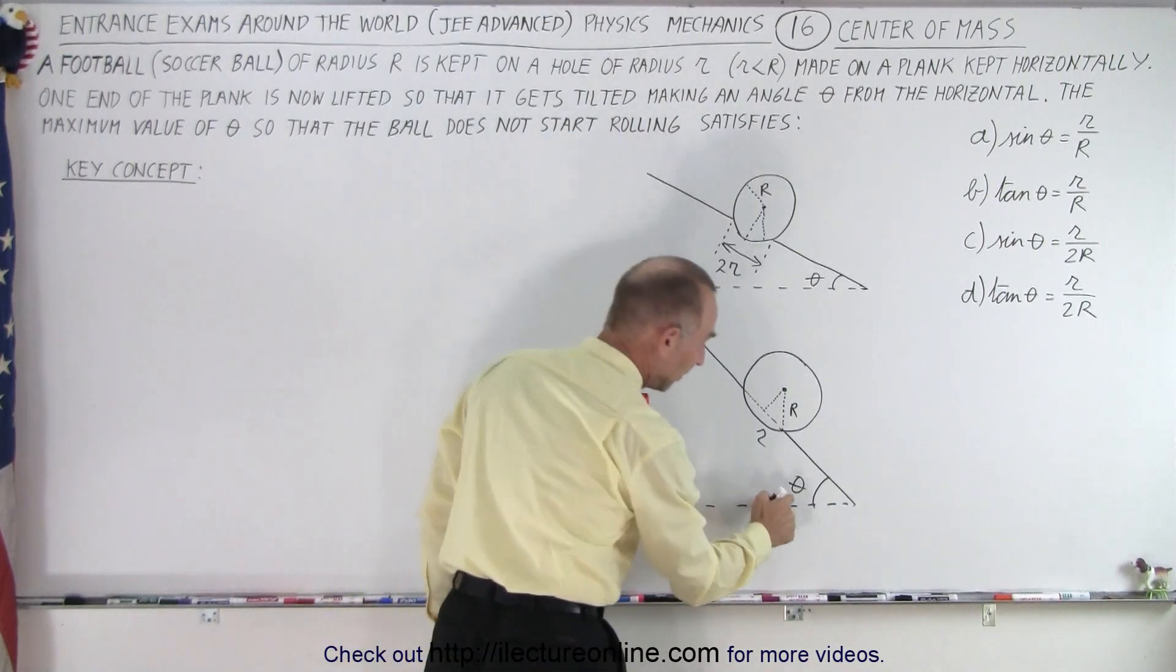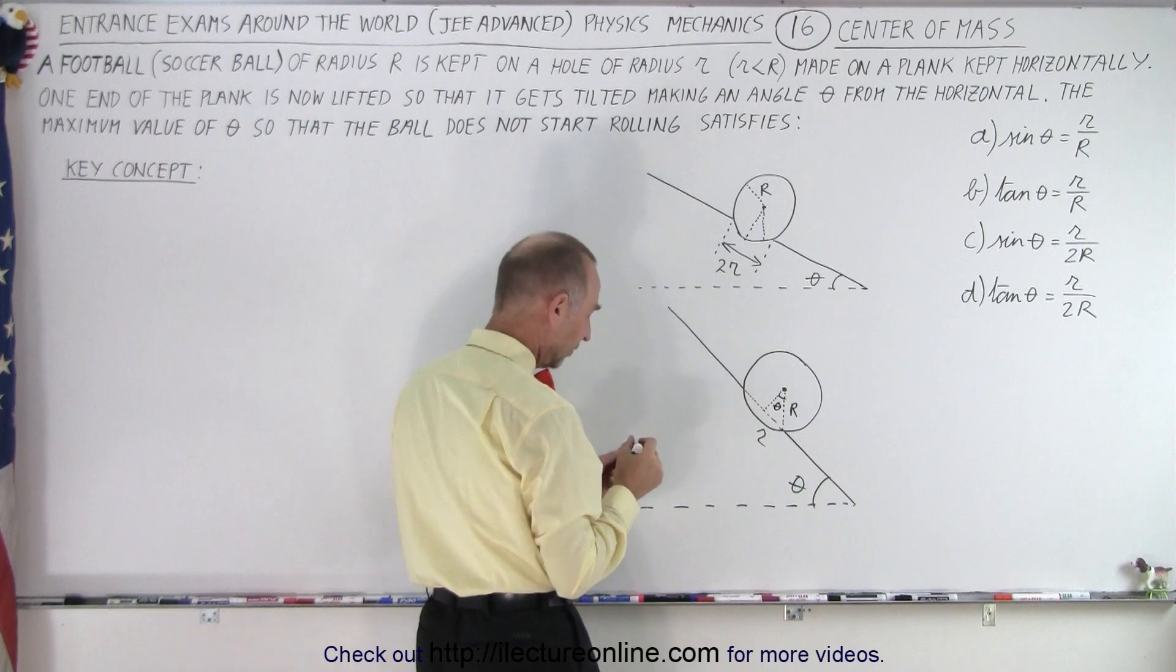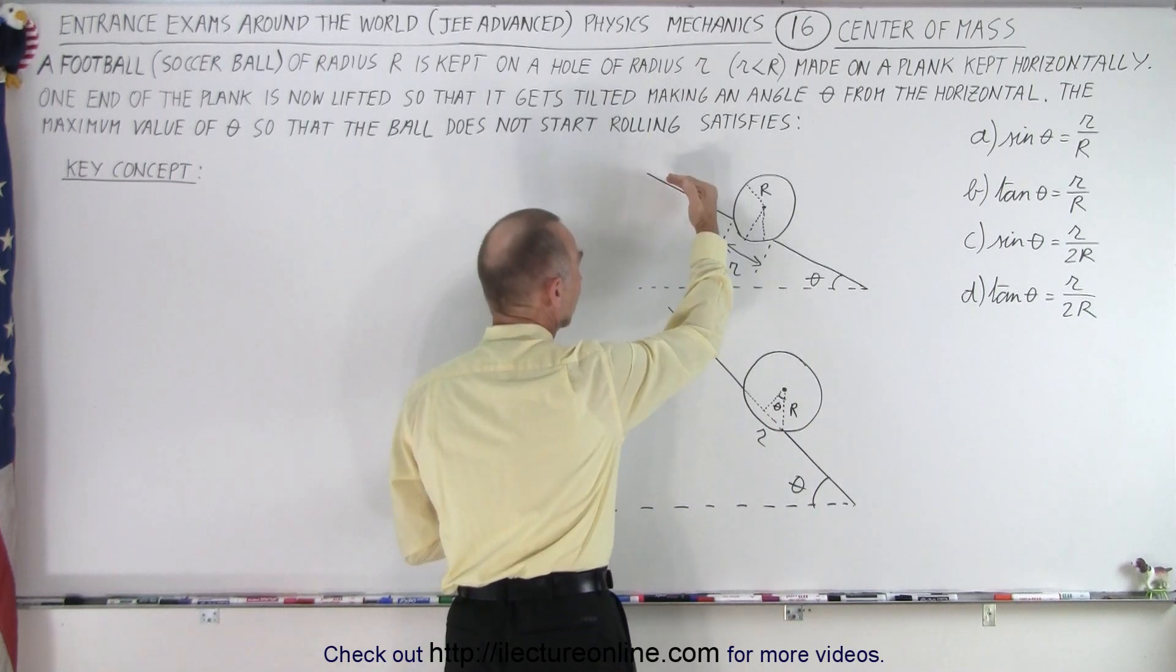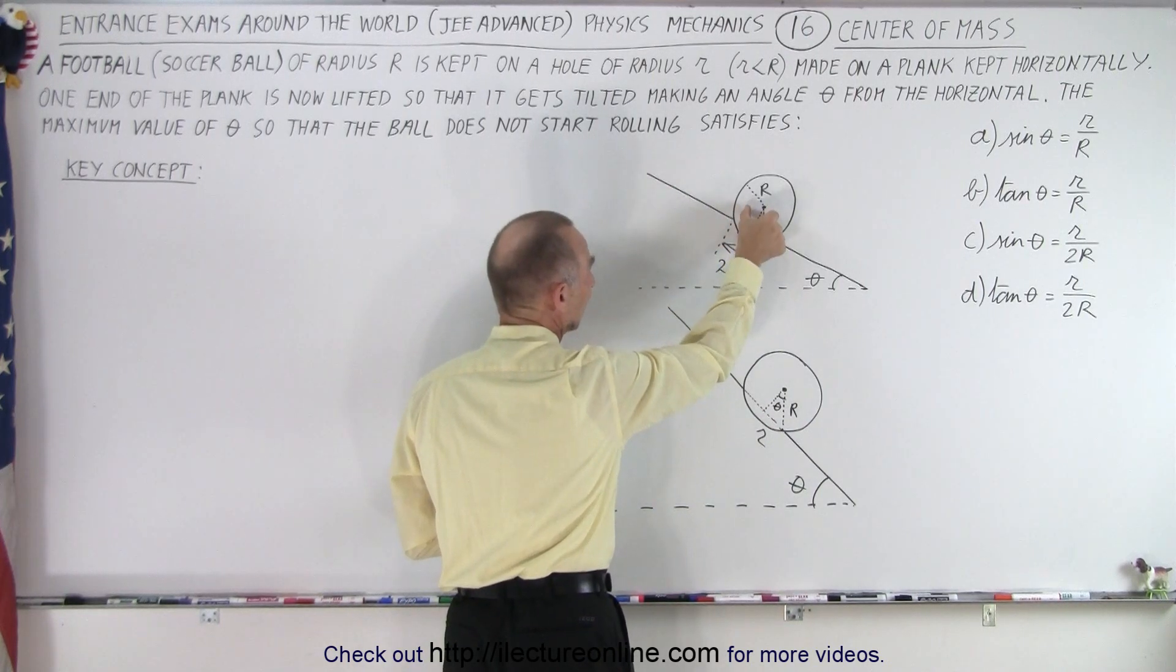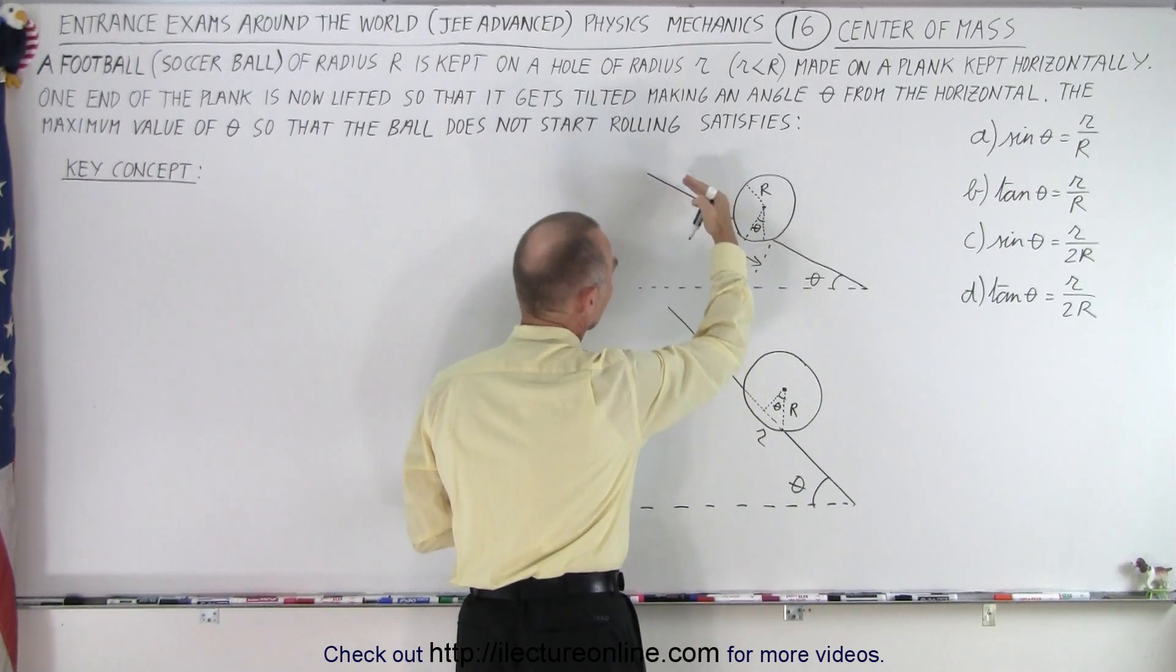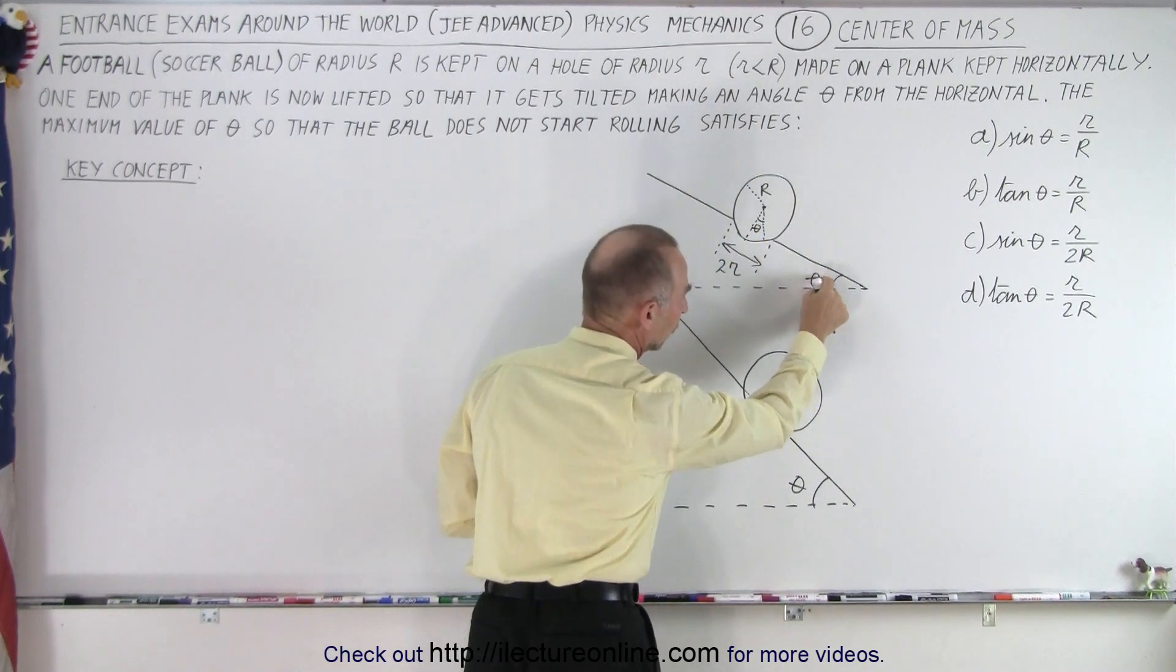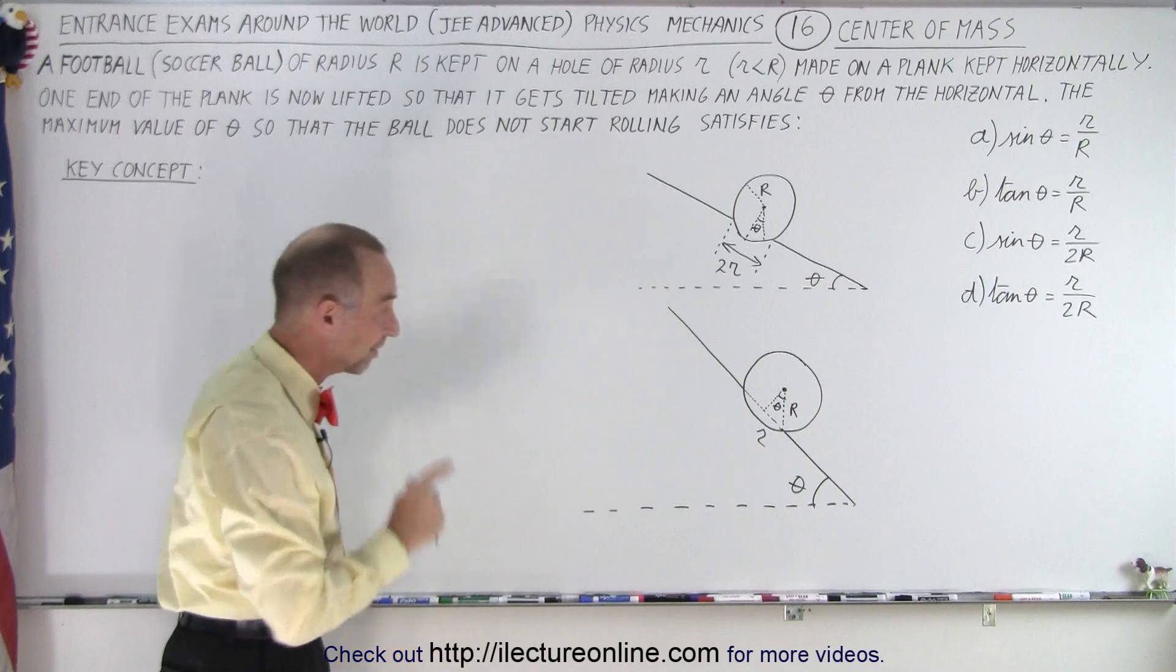Notice that this angle must be equal to this angle theta right there, because as we make the angle smaller right here, you can see that this angle here becomes smaller and smaller. So this is the angle theta, and then as the plane goes a little bit horizontal, these two lines will be on top of one another, and theta will go to zero, just like this angle will go to zero. So that's the angle.